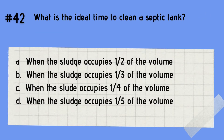Question 42: When is the ideal time to clean a septic tank? A. When the sludge occupies one half of the volume. B. When the sludge occupies one third of the volume. C. When the sludge occupies one quarter of the volume. D. When the sludge occupies one fifth of the volume. The answer is B — when the sludge occupies one third of the volume. Remember that it is ideal to clean the septic tank when the sludge occupies one third of the volume.